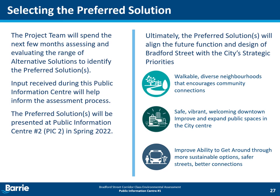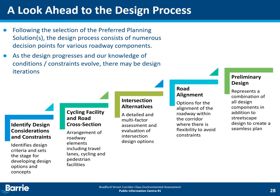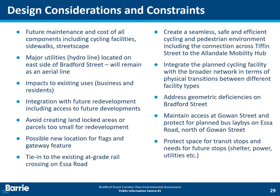Following the selection of the preferred planning solutions, the design process consists of key decision points for various roadway components. This is Phase 3 of the EA process. The diagram on the slide highlights the key components of the roadway design. The first step is to identify design considerations and constraints that should be factored into the design — these may be desired functions, physical features, geometric requirements, or limitations that could influence future design decisions. As the design progresses and our knowledge of conditions and constraints evolves, it is typical to have iterations at each step along the way.